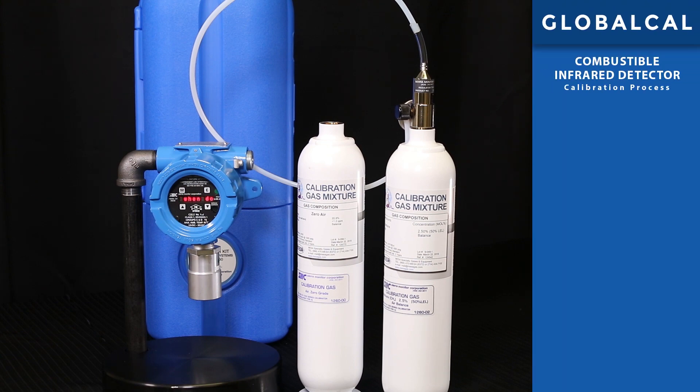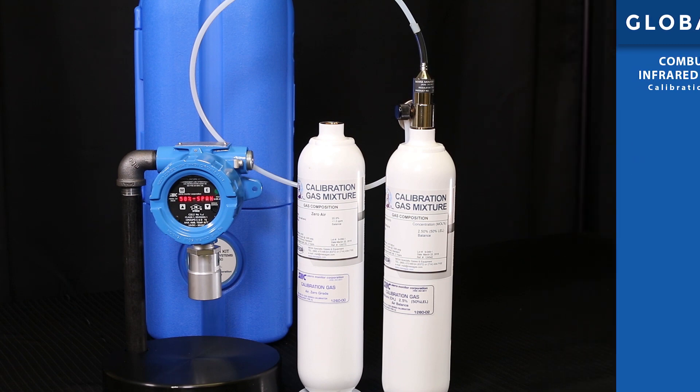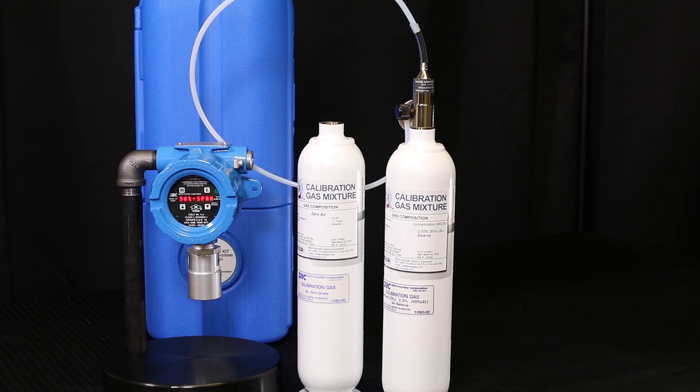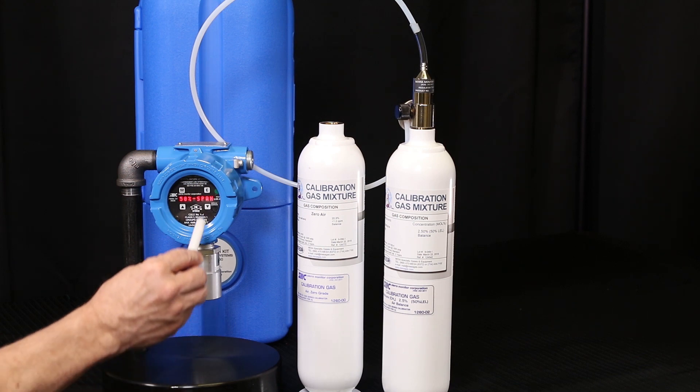Next is Step 2: applying the span gas. First, confirm the span gas concentration. Note that this is a combustible gas detector and we're using 50% LEL methane as our standard for this demonstration. Not all span gas concentrations are the same. Use the magnetic wand to tap E to confirm.